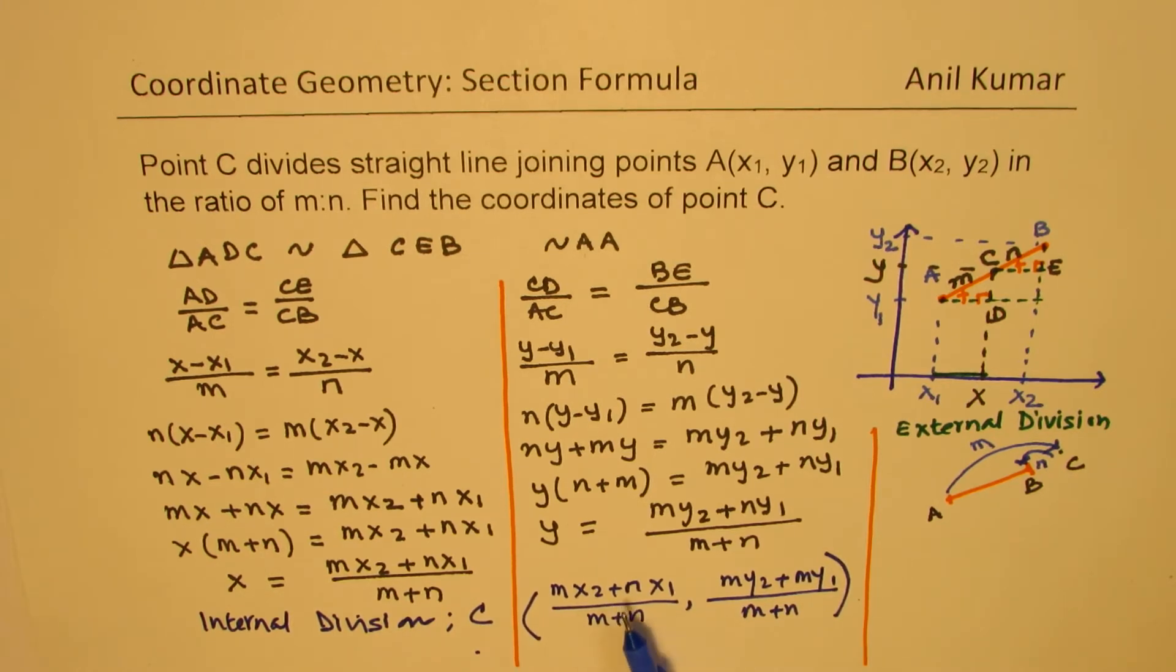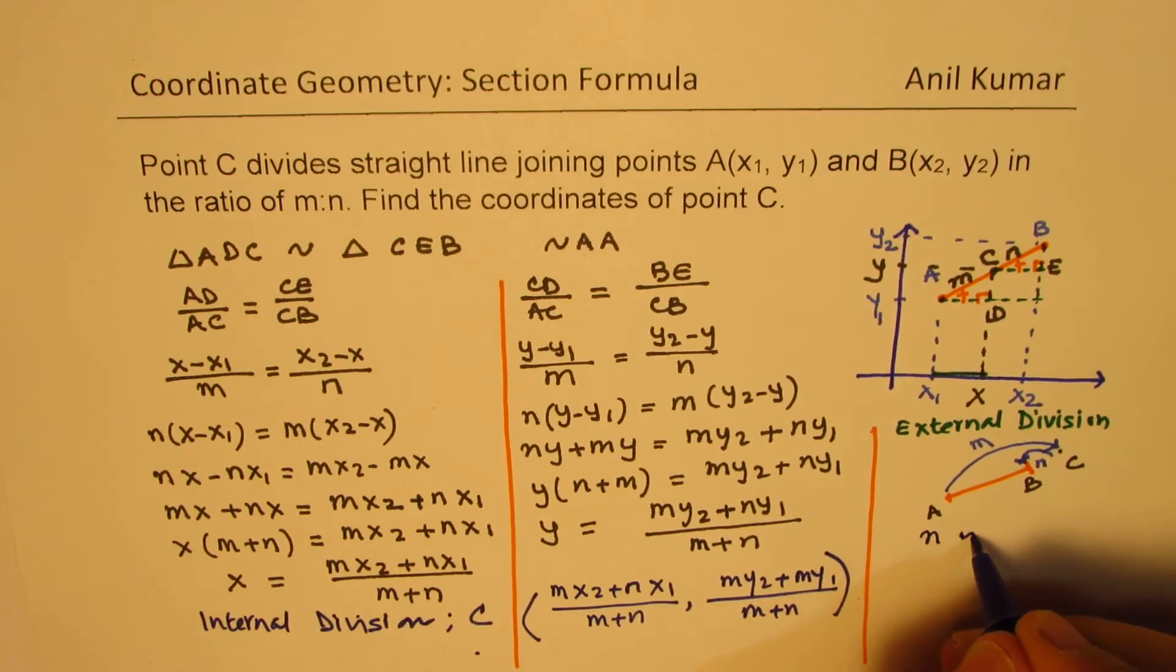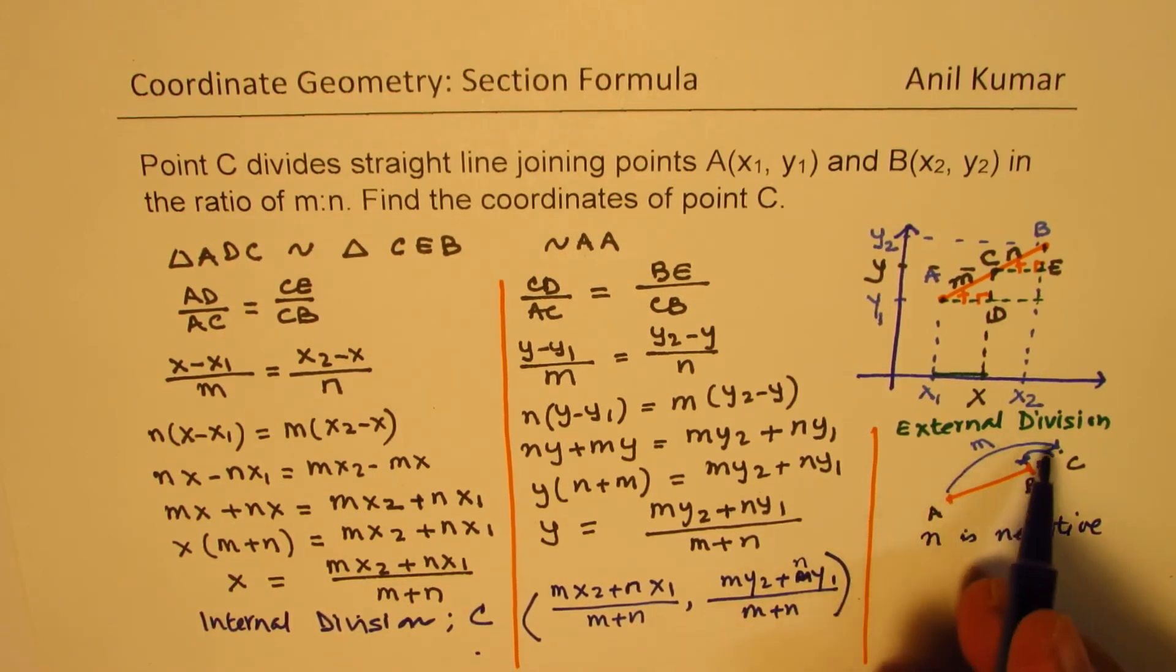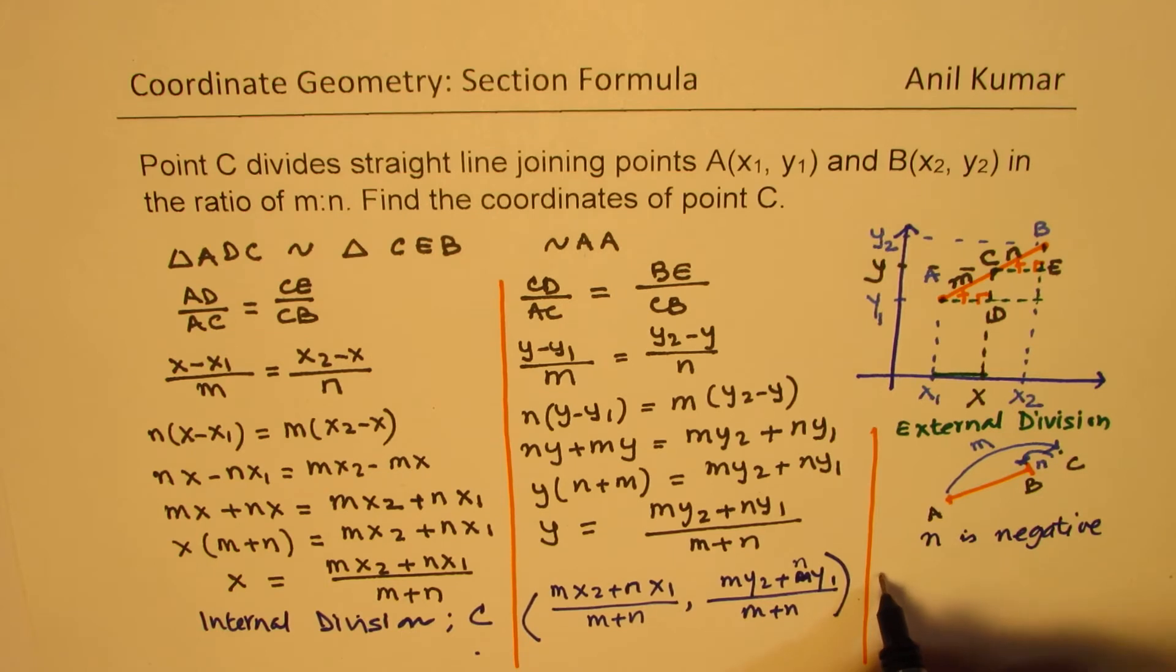So in that case, the formula will change a bit, and we'll have a negative sign in between. So that is the only difference which we are going to get, plus both the signs, n will be negative. So now in this case, you can see the value of n is negative. So if I replace n with a negative sign, then I'll get my formula for external division. So let's write down. For external division,